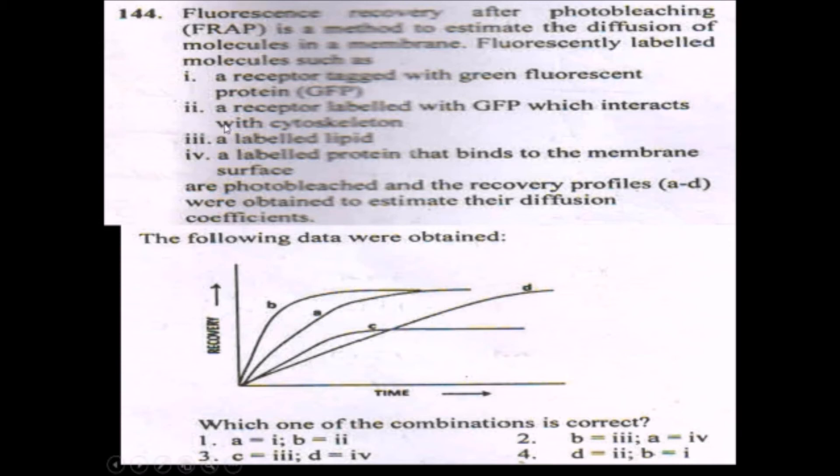Accordingly, first of all, we will solve the receptor labeled with GFP which interacts with cytoskeleton. We can easily analyze it. If you see the C graph, the immobile fraction is high. In cases A, B, and D, almost complete recovery occurs. So C represents the cytoskeleton-bound protein.